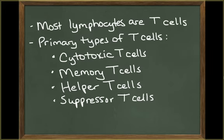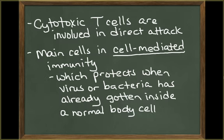Most lymphocytes are T cells. The primary types of T cells are the cytotoxic T cells, the memory T cells, the helper T cells, and the suppressor T cells. Cytotoxic T cells are involved in direct cellular attack. They are the main cells involved in cellular immunity, or cell-mediated immunity. This type of immunity protects the body when a pathogen has entered into one of the body's normal cells.